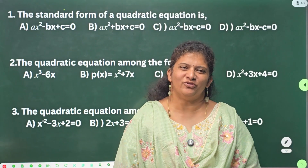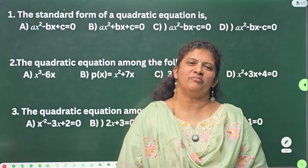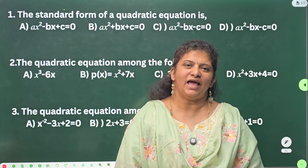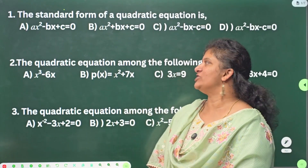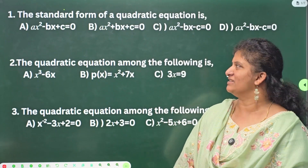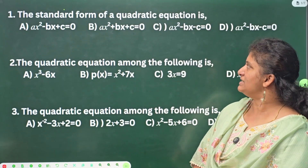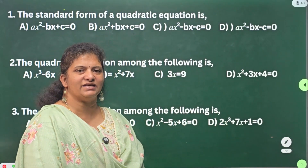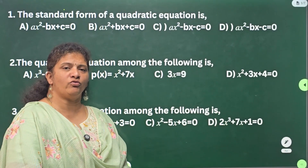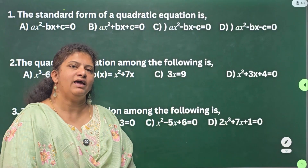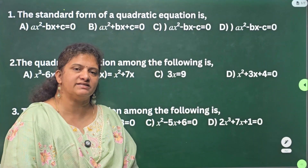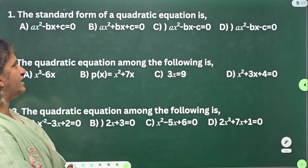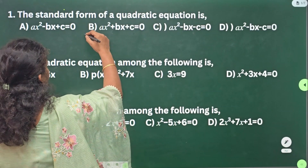Hi, hello! Welcome back to Home School. I'm your Adhika Mom. Class 10 Mathematics — we are going to discuss the LBA of chapter Quadratic Equations. First one: the standard form of a quadratic equation. We know the standard form of a quadratic equation is ax² + bx + c = 0.